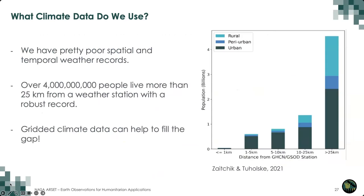It's all well and good thinking about climate data, but in a lot of places around the world we don't necessarily have information about temperature or humidity — we have a pretty poor spatial and temporal weather record. Over 4 billion people live more than 25 kilometers away from a weather station with a robust record. When we're trying to model connections between climate and humans, we rely on having information about the climate humans were exposed to, and if we're just using weather station data, we don't have that tight coupling.